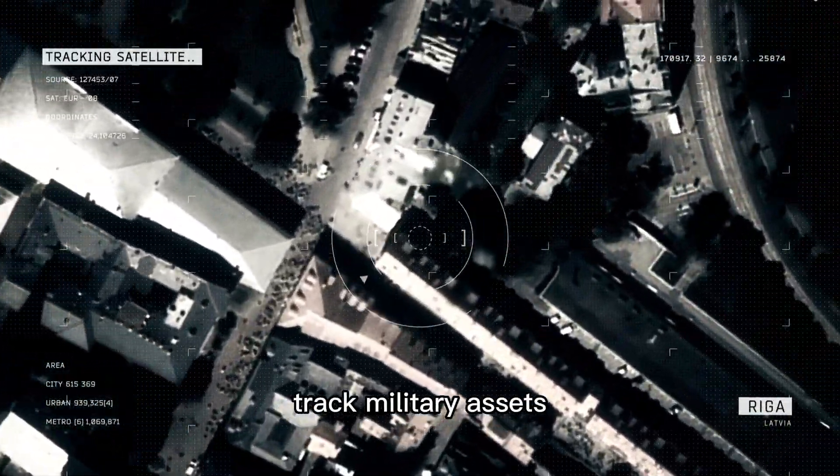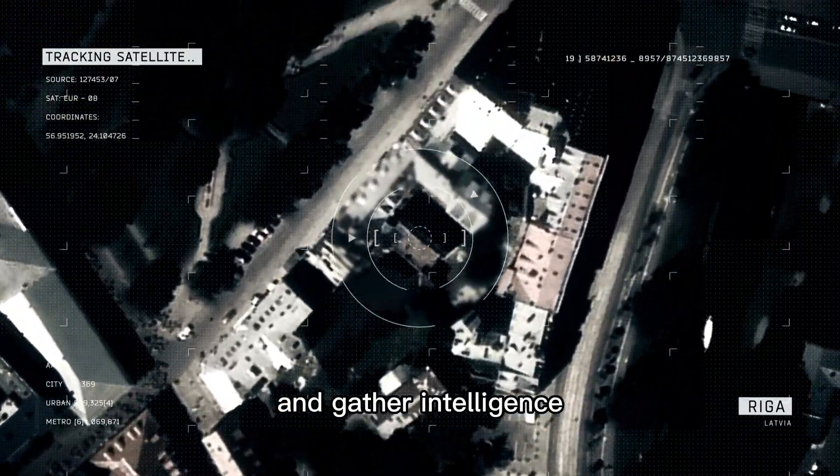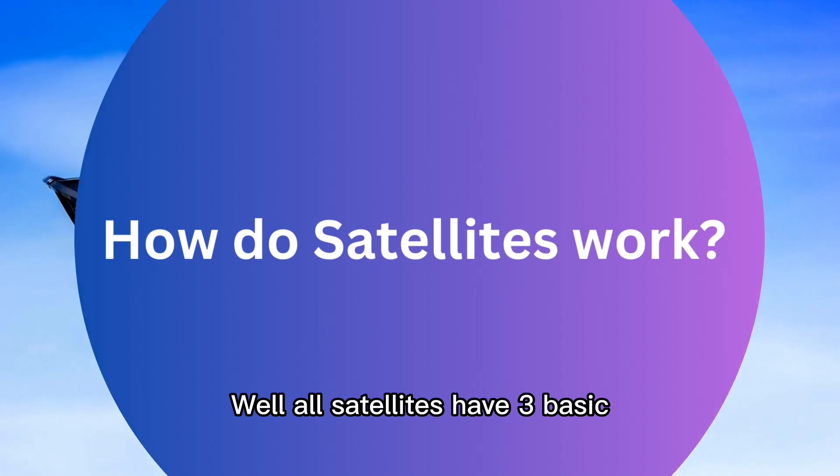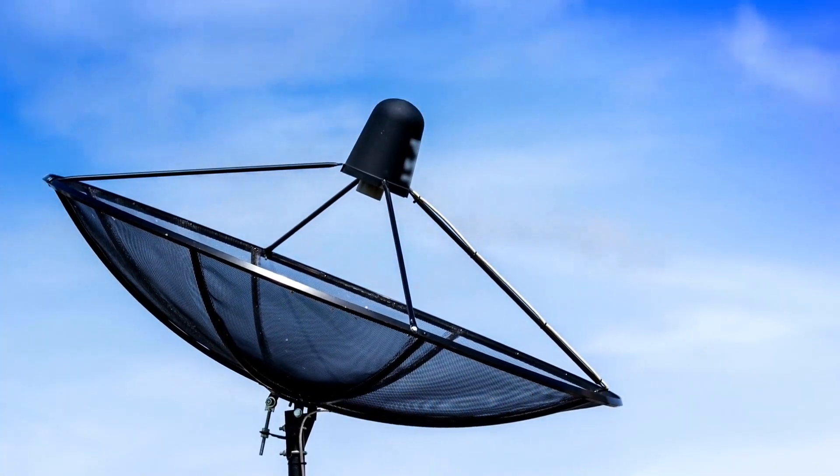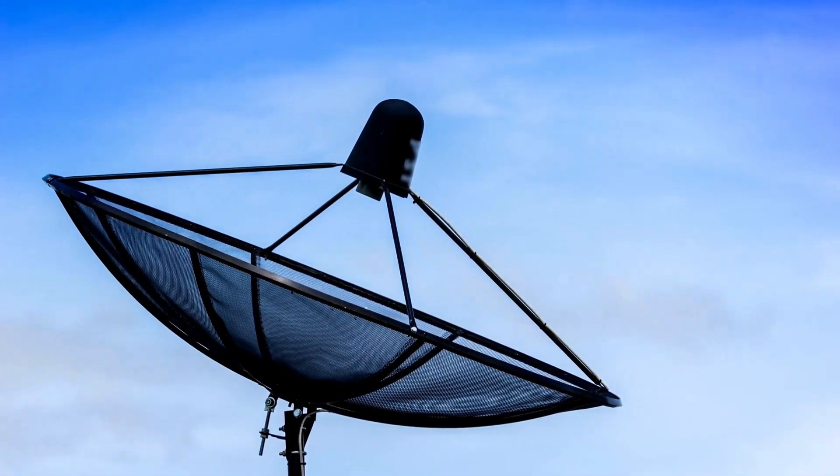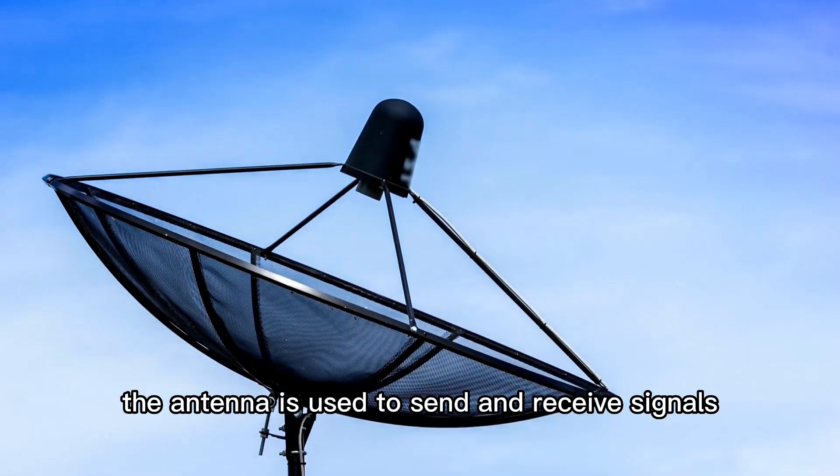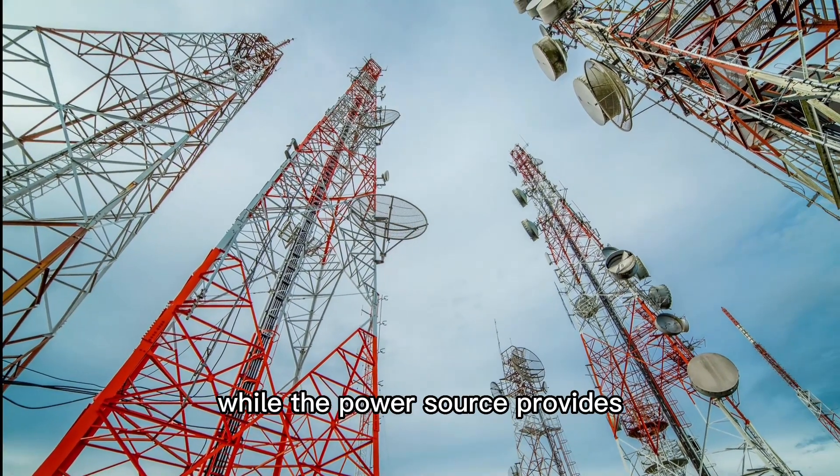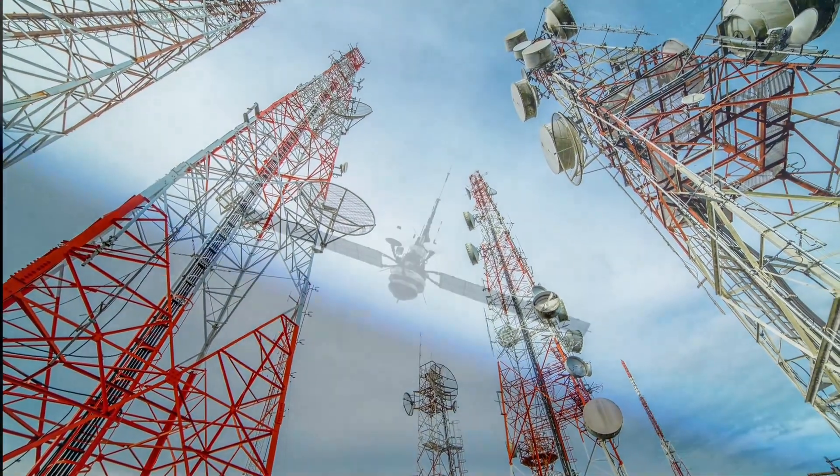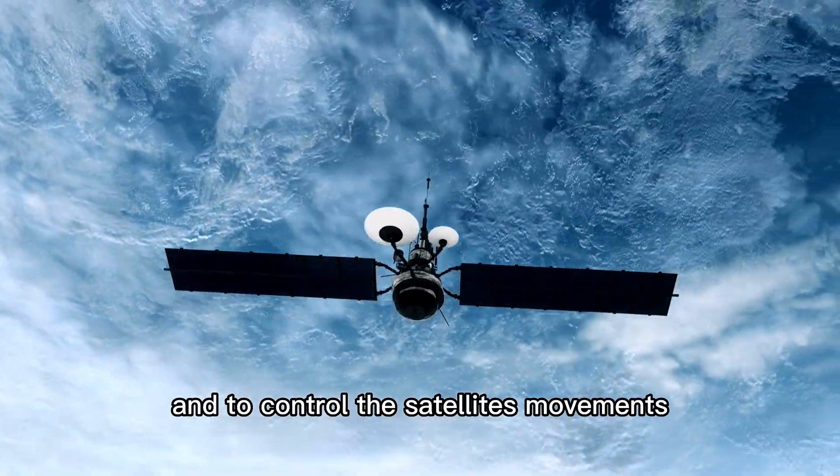How do satellites work? Well, all satellites have three basic parts: the antenna, the power source, and the electronics. The antenna is used to send and receive signals, while the power source provides the energy needed to keep the satellite running. The electronics are used to process the signals and to control the satellite's movements.